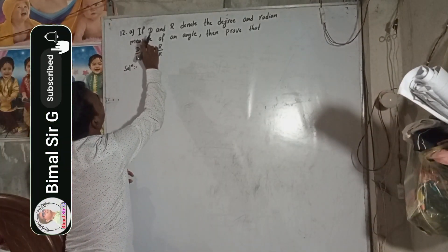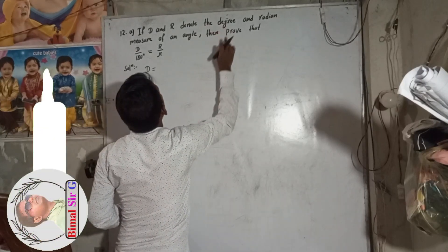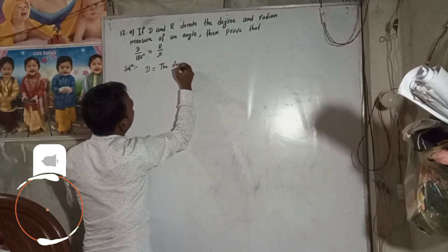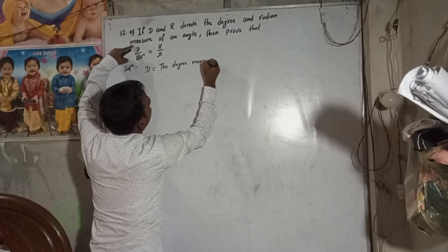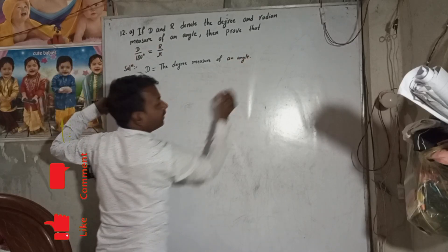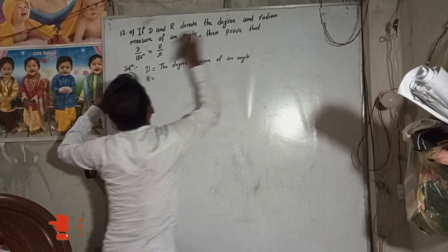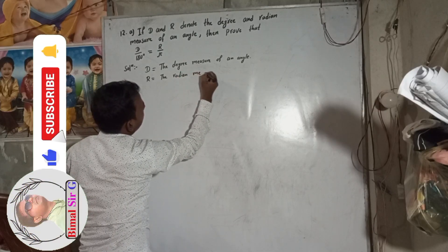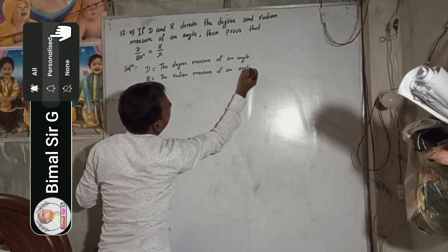So here, what is given? D and R denote — that means D is equal to the degree measure of an angle. And R is equal to the radian measure of an angle.